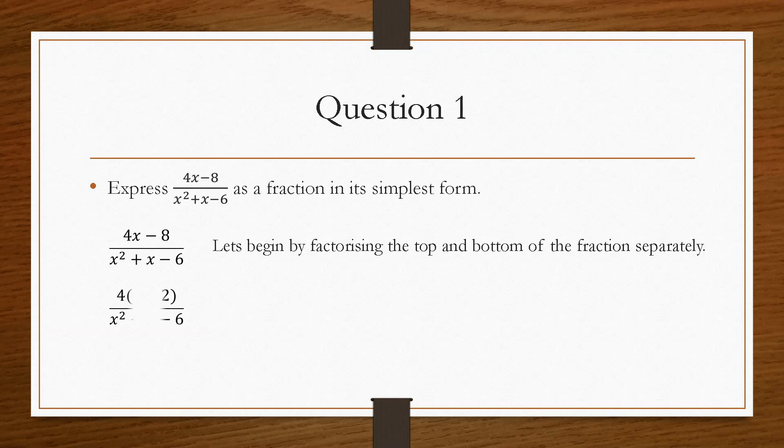So the top of the fraction is a common factor. Now we can see we have a common factor of 4. So we can take the 4 out, and that will give us 4 bracket x minus 2. And then the bottom of the fraction is a trinomial.